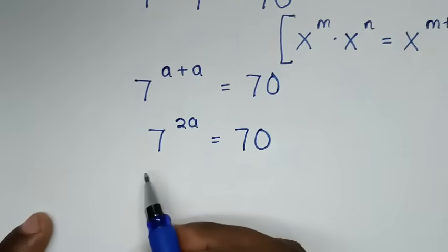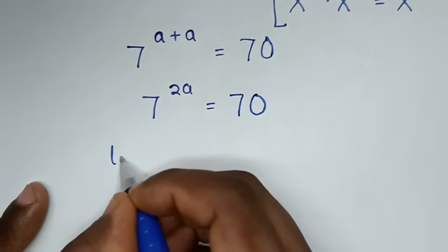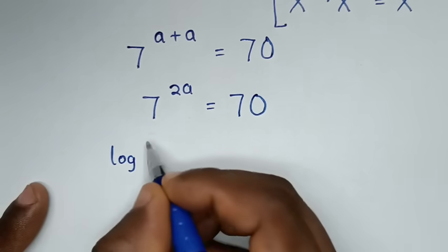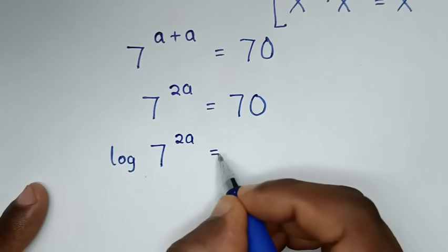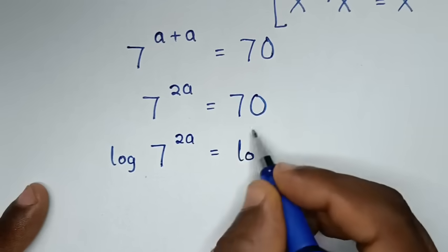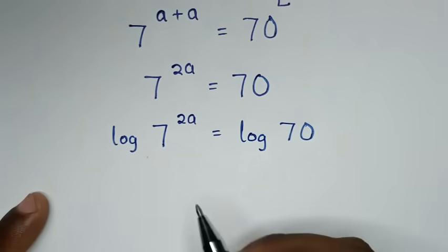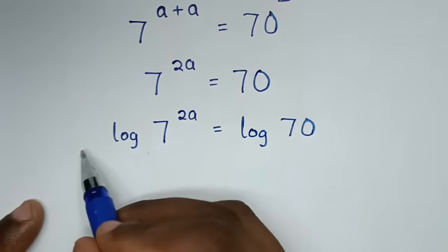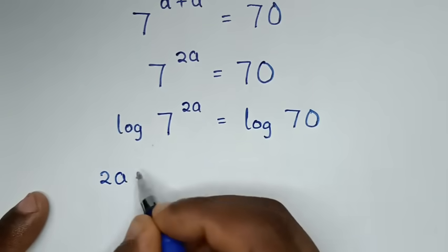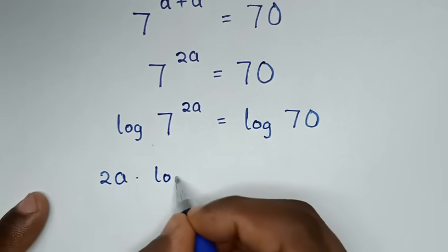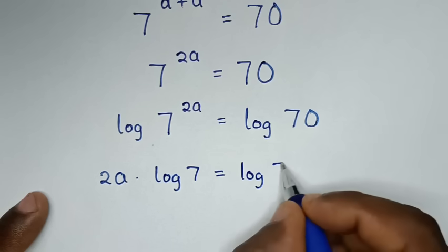So from here we will apply log to both sides. Then it will be log of 7 power of 2A is equal to log of 70. This power of 2A will move to the front, so it will be 2A times log of 7 is equal to log of 70.